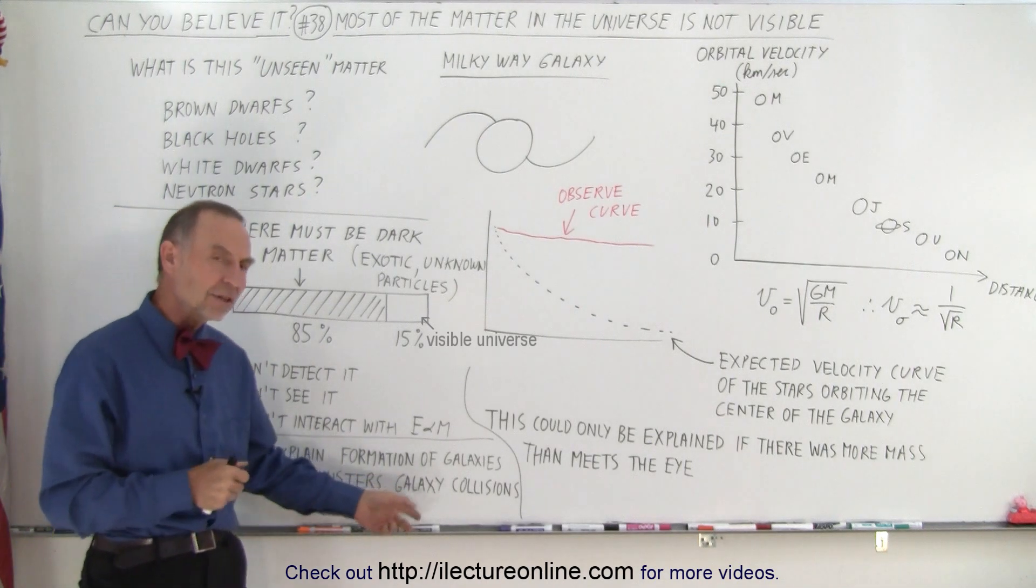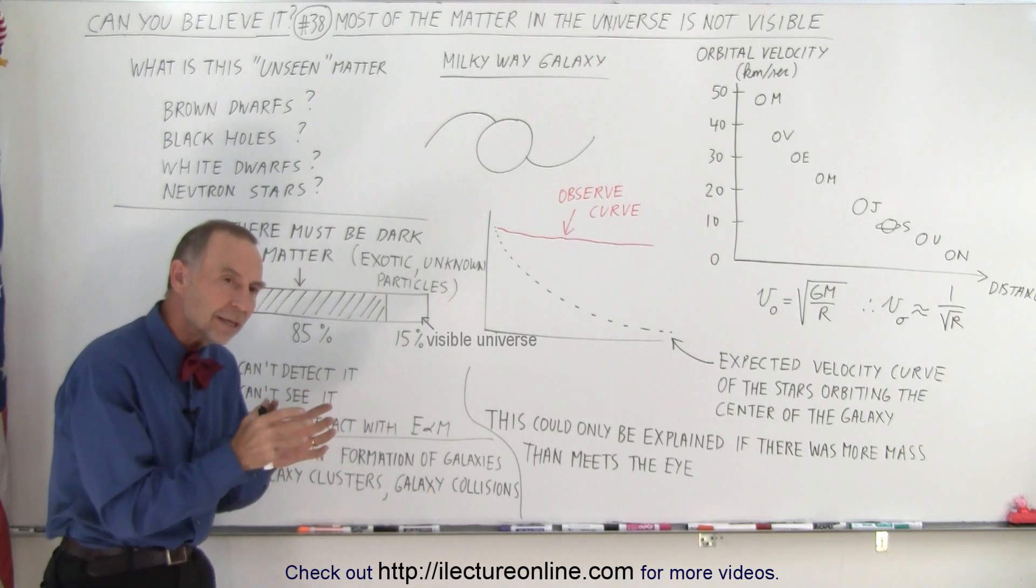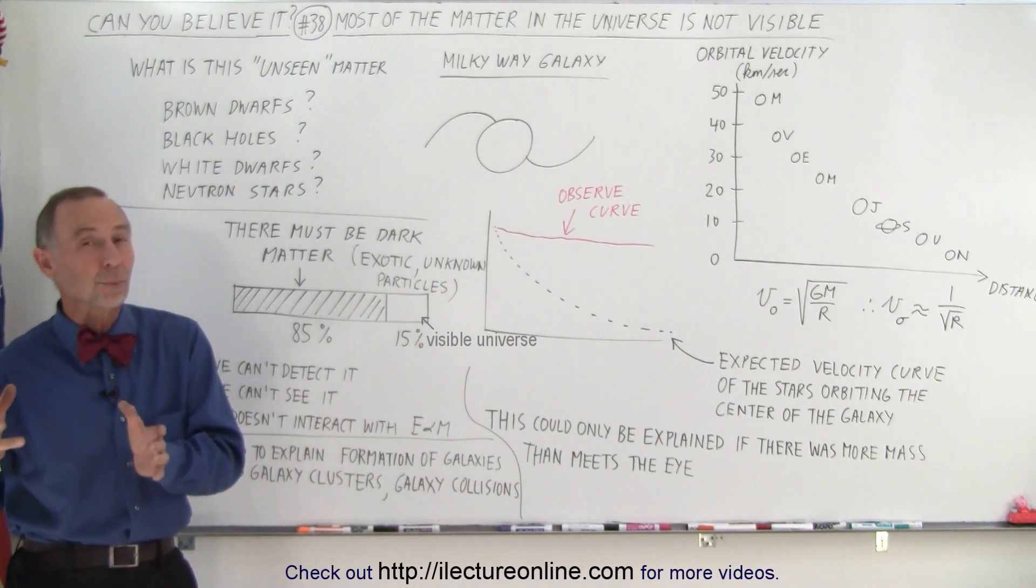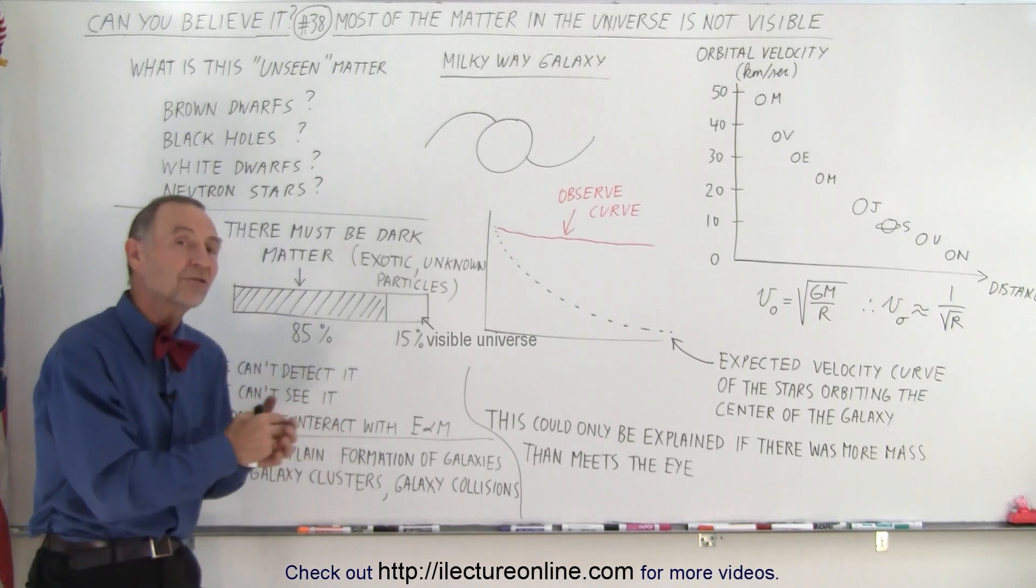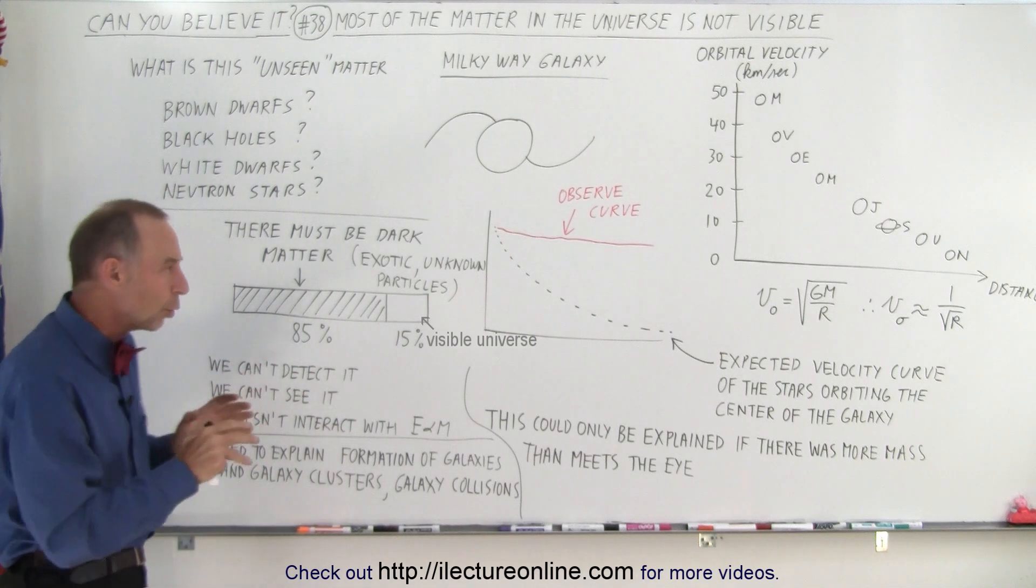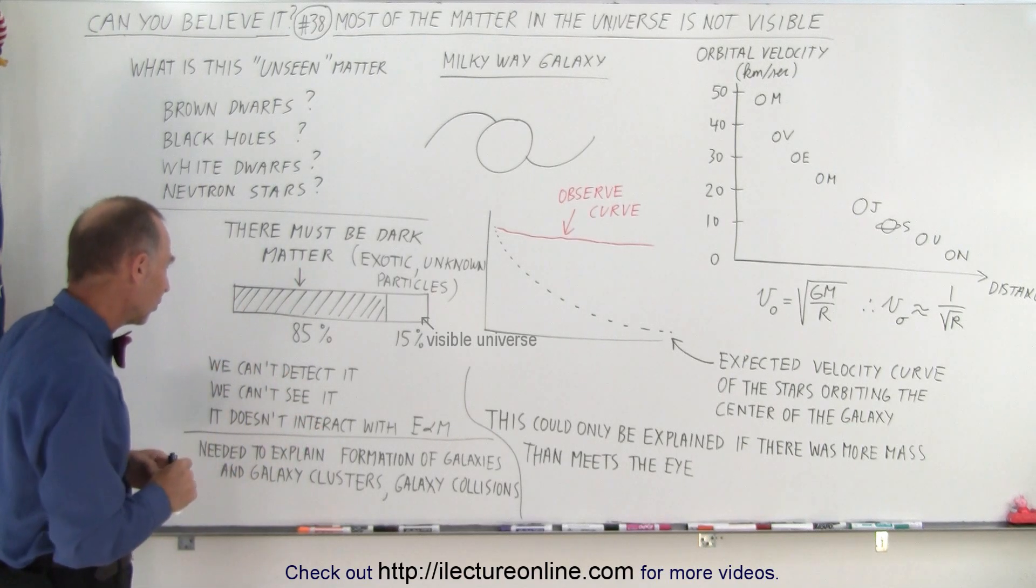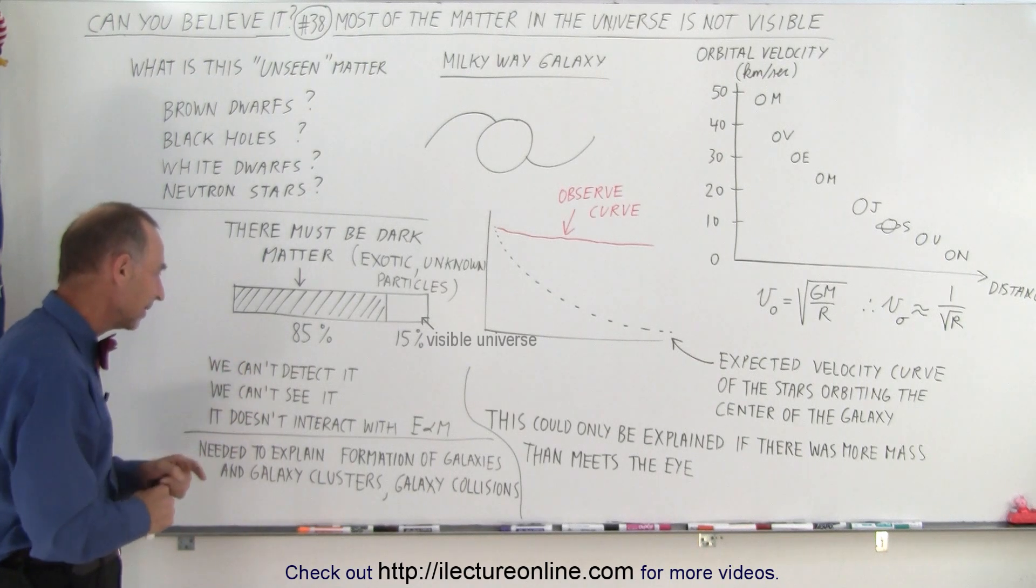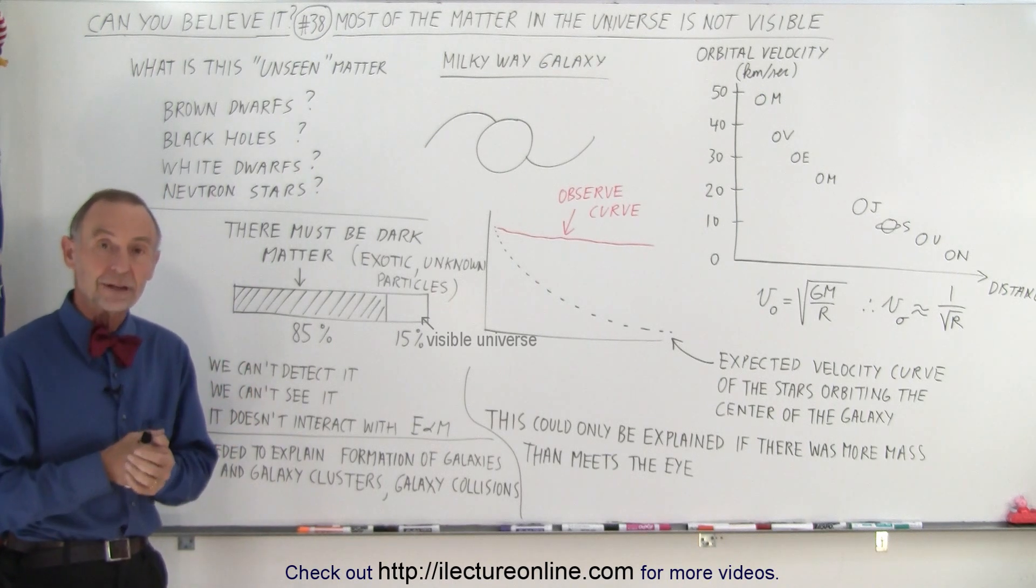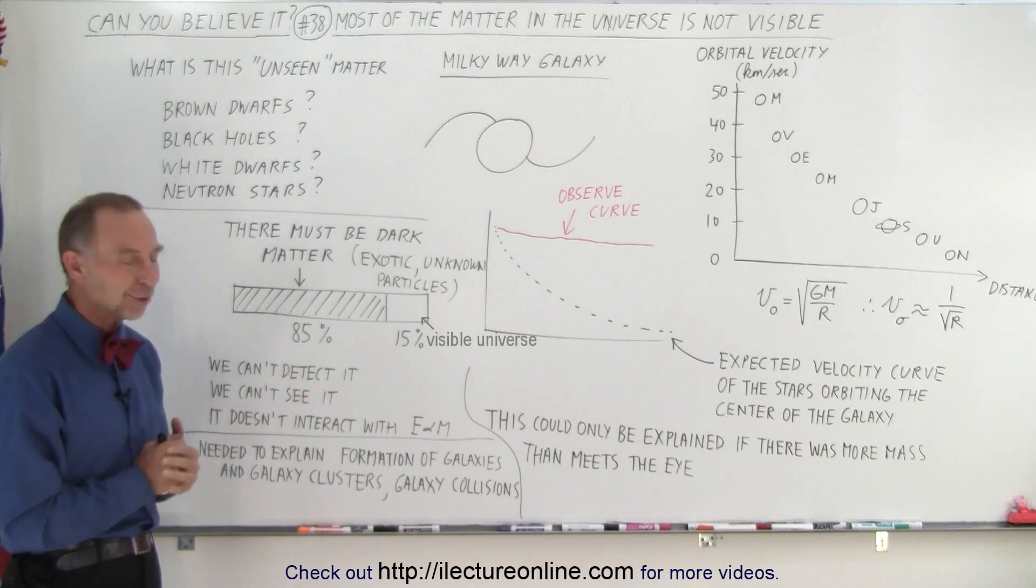And also when we study galaxy collisions, the way the galaxies interact when they collide, again, what we see, and if we then assume that dark matter doesn't exist, well, what we see doesn't match up with the assumption. Dark matter does exist, and it does match up when we assume dark matter exists. So it seems like all the indications from observation seem to tell us that dark matter exists, we just can't detect it, we can't see it, and it doesn't interact with E&M radiation, so we really have no way of figuring out what it is or detecting it, although that doesn't stop anybody, we're still trying to do so.